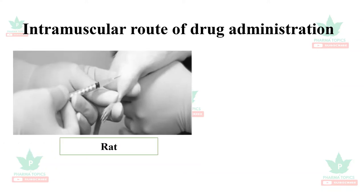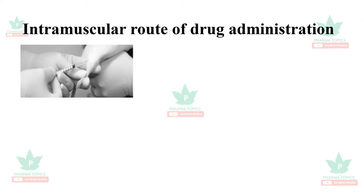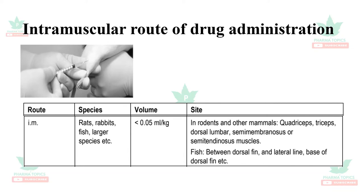In the intramuscular route of drug administration, it can be administered to rats, rabbits, fishes, and larger species. The volume administered is very less — less than 0.05 ml per kg in rodents and other mammals. The quadriceps, triceps, dorsal lumbar, semimembranosus, or semitendinosus muscles are used. In case of fishes, the intramuscular route is administered between the dorsal fin and lateral line, and the base of the dorsal fin.